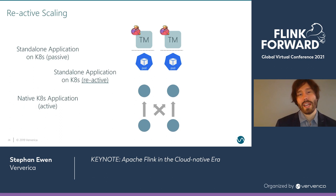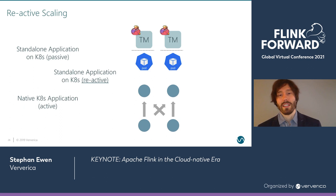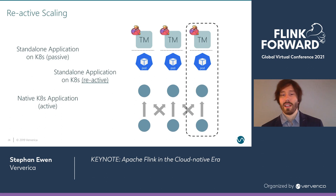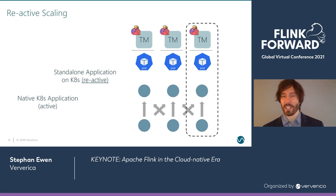The new reactive mode sits in the middle between the two. It lets Flink react to external resource changes. If you bring up a new pod with a new task manager, the scheduler notices more resources are available and scales out the job for you. Similarly, if you remove resources, it scales in. In the long run, this will likely replace the passive mode — with active modes for more managed platform deployments, and reactive mode for everyone who wants to treat Flink like any other application: define some metrics, create a horizontal pod autoscaler, and let it fly.